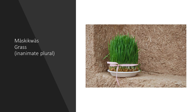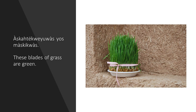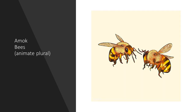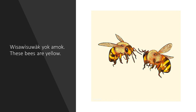Musquequvasuwa — grass, inanimate plural, literally blades of grass. Create a sentence saying: These blades of grass are green. Answer: these blades of grass are green. Amok — bees, animate plural. Create a sentence saying: These bees are yellow. Answer: wisawasuwak jok amok — these bees are yellow.